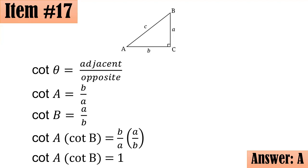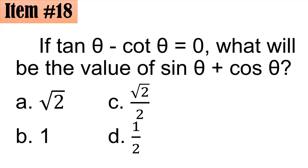Number 18. If tangent theta minus cotangent theta equals zero, what will be the value of sine theta plus cosine theta? Is it A square root of 2, B 1, C square root of 2 over 2, or D 1 half? Sabi ni Sir Sadie, letter A daw.